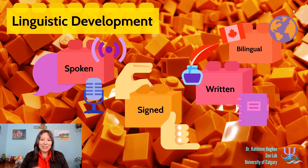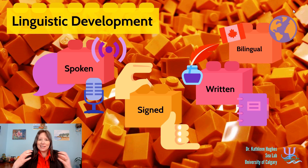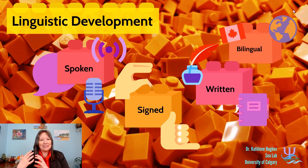Welcome to Developmental Psychology Unit 6. In this unit, we'll be discussing linguistic development. Language is a symbolic structure that can be spoken, written, or signed. We're going to break it down into those three different sections: how we develop spoken language, signed language, and written language.